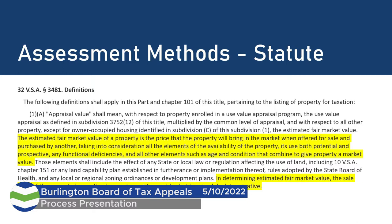Interestingly, the statute goes on to say that in determining estimated fair market value, the sale price that the property actually sold for is one element to consider, but it's not solely determinative. Sometimes we'll see somebody paid too much for a property — more than it was worth — and there are reasons for that. And sometimes it was a transaction between friends or relatives, and that sale price does not solely determine fair market value. The important part is that if it's a fair market transaction the sale is important, but you should also be looking at other market indicators and other sold properties.